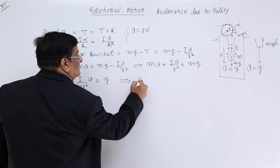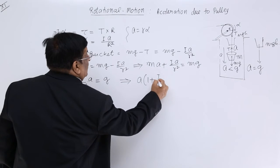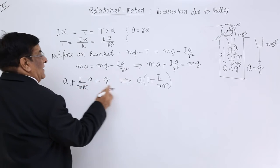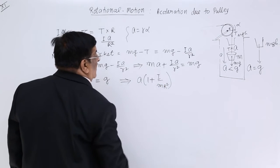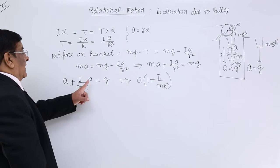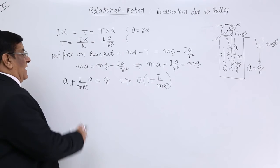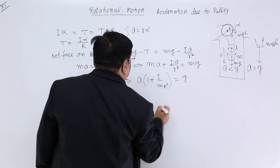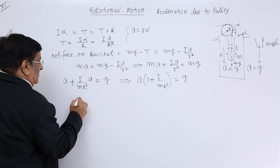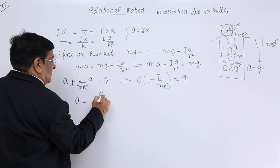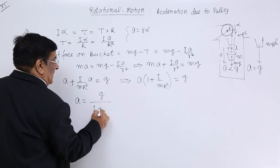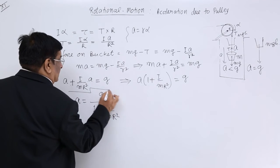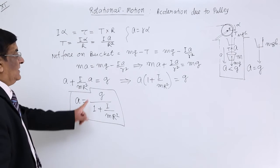This leads to the next step. Take a common: 1 plus I upon m r square. Small r or capital r, it is one and the same thing, that stands for radius of the pulley. So here a is taken as common: 1 plus I upon m r square is equal to g. So a is equal to g upon 1 plus I upon m r square. This is the acceleration.